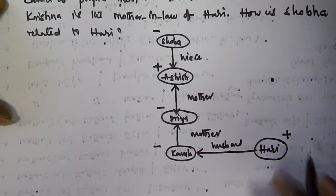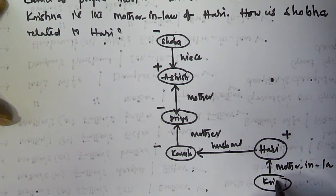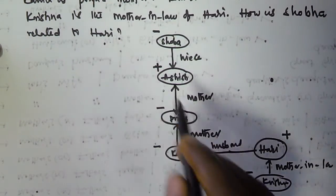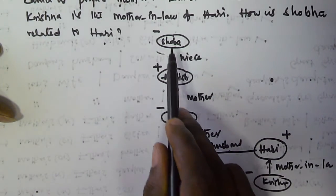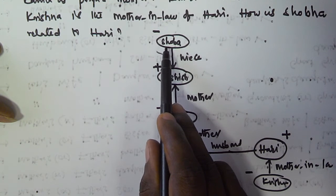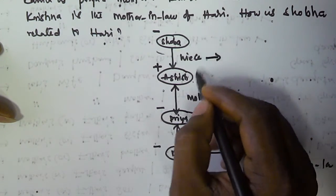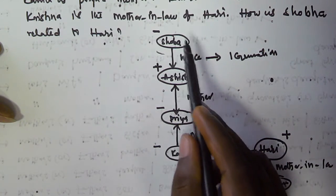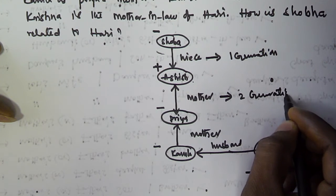Krishna is the mother-in-law of Hari. Krishna is negative because she is a female. Now we have to find how Shobha is related to Hari. Shobha is the niece of Ashish, meaning she is the daughter of Ashish's brother. So there is one generation gap between Ashish and Shobha. Priya is the mother of Ashish, so there is a two-generation gap between Shobha and Priya.